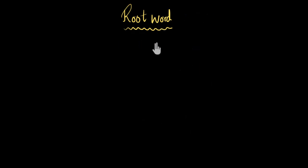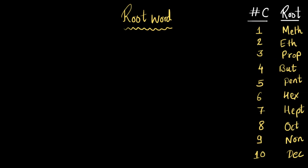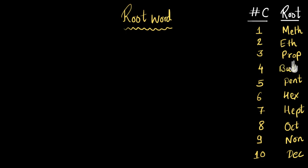Root words are words that denote the number of carbon atoms present in the molecule. Traditionally, we use these root words: if there is only one carbon atom, we use 'meth'; for two, we use 'eth'; for three, 'prop'; for four, 'but'; and so on.